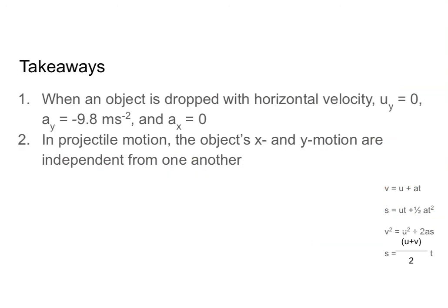Let's move to our takeaways. When an object is dropped with only horizontal velocity, you know that Uy = 0, Ay = −9.8, and Ax = 0. We also know that in projectile motion, the object's x and y motion are independent from one another — and in this video you got to see how that affects the math. There is one important exception: time is the same for both x and y. It is now your turn to solve some horizontal projectile motion problems. Best of luck and happy solving!